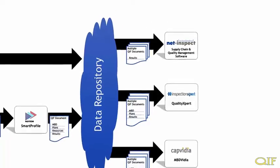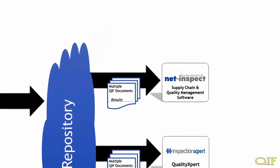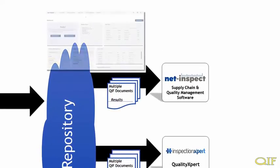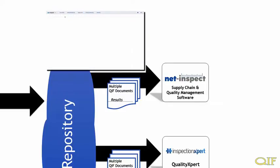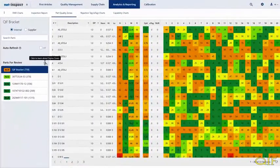Once we have completed the evaluation of the measurements, we can now export the GD&T evaluation results to a QIF results file and place them in our data repository. We now have CAD and PMI data, measurement plan data, and measurement results data available for analysis in our data repository.